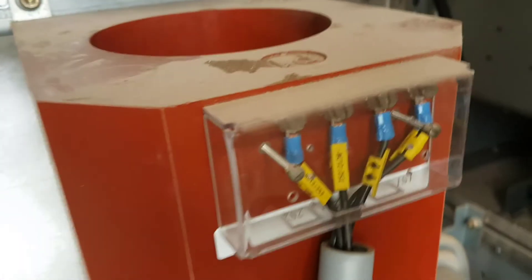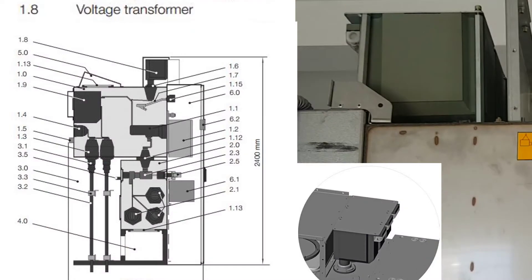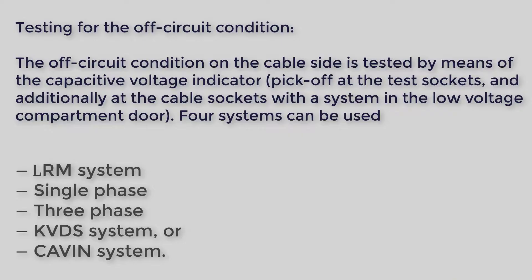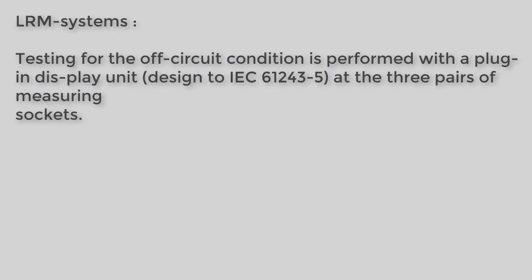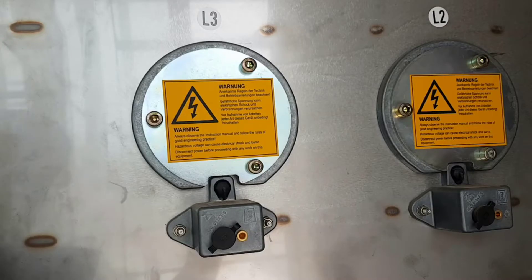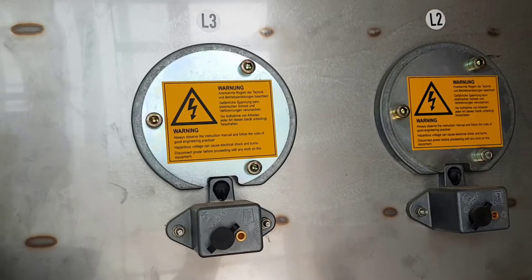This is the CT (current transformer) and this is the VT placed above the panel. Testing of the off-circuit condition on the cable side is done by the LRM system. This is a single-phase LRM system located at the back side of the panel.